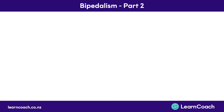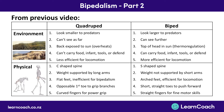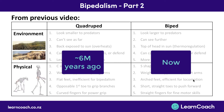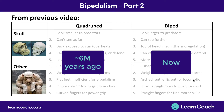Welcome to this video on bipedalism part two. In the last video we looked at how when the environment changed to a savannah environment, bipeds had a bunch of advantages over the quadrupeds. We also looked at some of the physical differences. But that was one and a half million years ago that we were quadrupeds and now we're bipeds — a lot more than this has changed. So in this video we're going to look at some of the other changes that have occurred in that time.